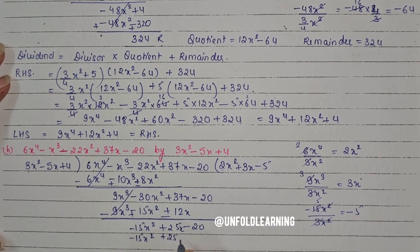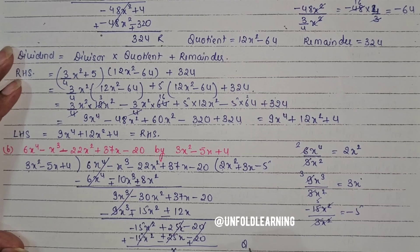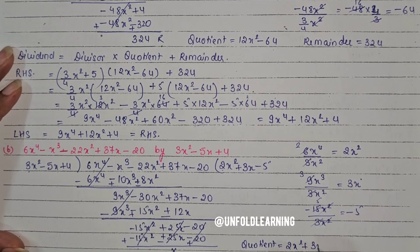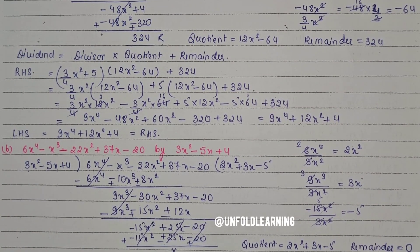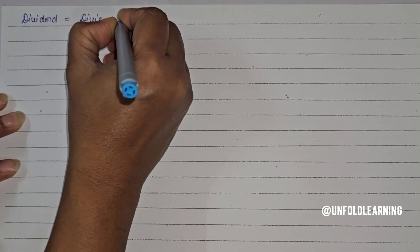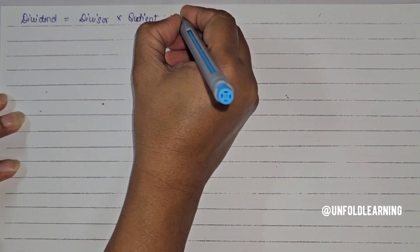Subtracting: sign change gives plus, so all three terms cancel — remainder is 0. Quotient is 2x² plus 3x minus 5 and remainder is 0. Now we verify using dividend equals divisor times quotient plus remainder.